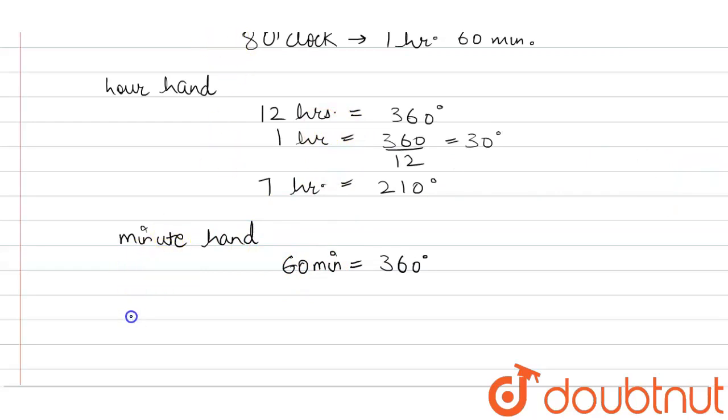The difference is 360 degrees minus 210 degrees, which equals 150 degrees. So the angle at 8 o'clock is 150 degrees.